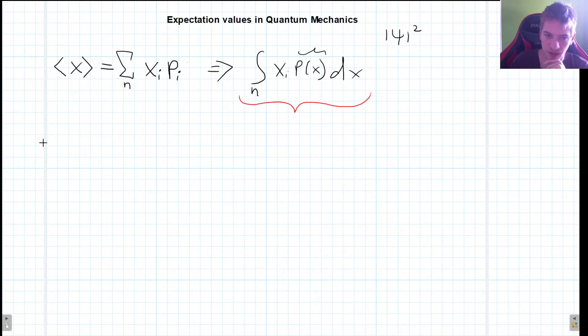So in quantum mechanics, let's write it down, in quantum mechanics, we would have this expectation value of x. This is just going to be the integral over all possible x's, so from minus infinity to infinity, of our variable times this. Oh, I just noticed I called this n and this i. They should have been the same.